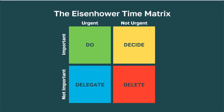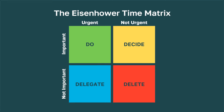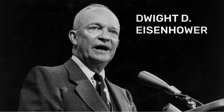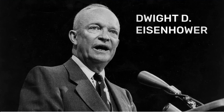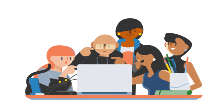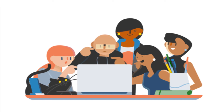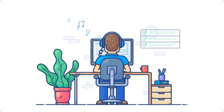The Eisenhower Matrix, also known as the urgent-important matrix, is a time management and productivity tool attributed to former U.S. President Eisenhower. It provides a framework for categorizing tasks based on their urgency and importance, enabling individuals to prioritize effectively and focus on tasks that align with their goals and objectives.